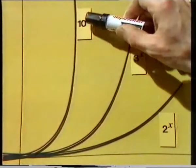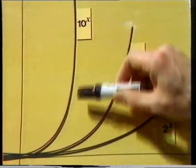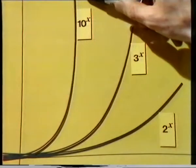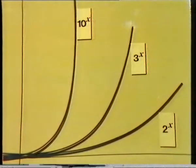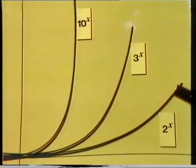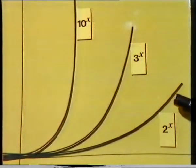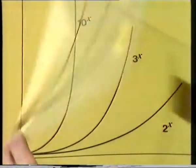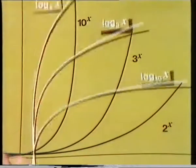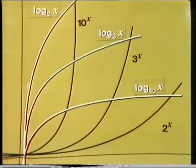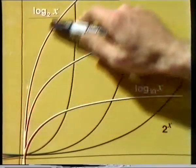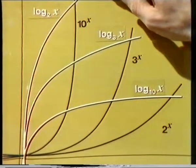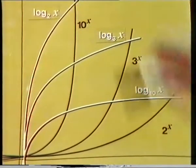We have the curves 2 to the x, 3 to the x, and 10 to the x, with 10 to the x being the steepest. Now let's look at their logarithms. Watch what happens to 2 to the x, the lowest curve — log to the base 2 turns out to be the steepest curve. The orders have been reversed.